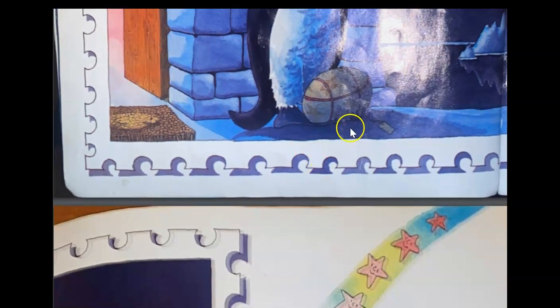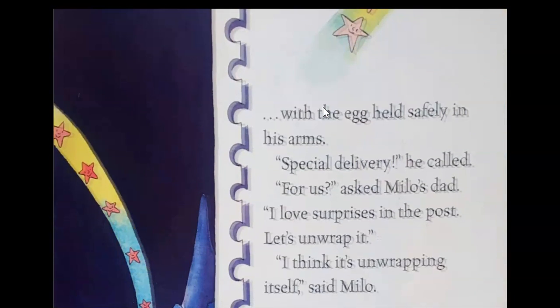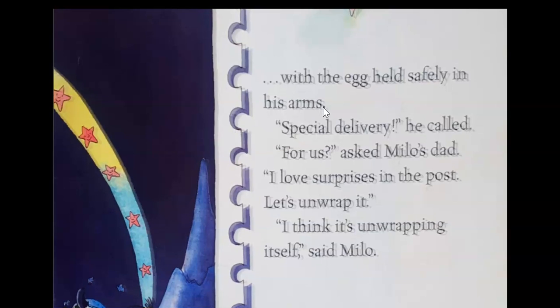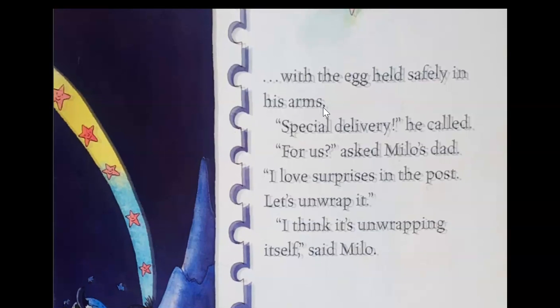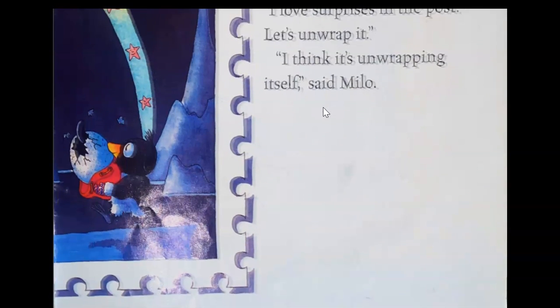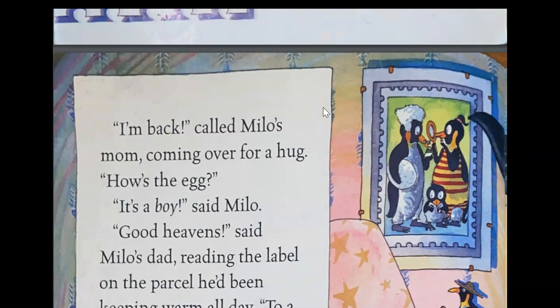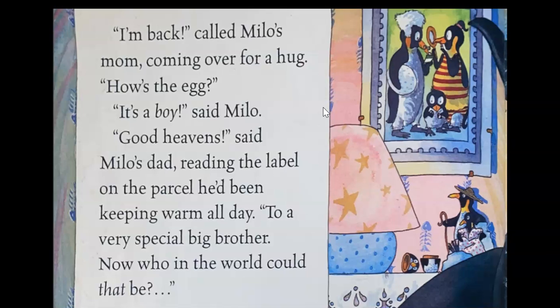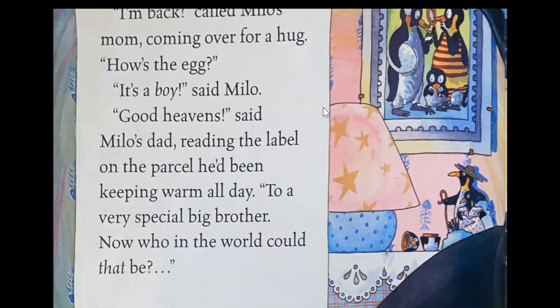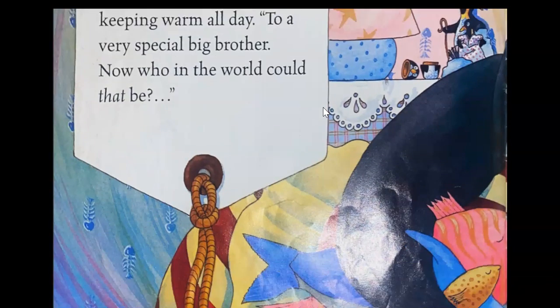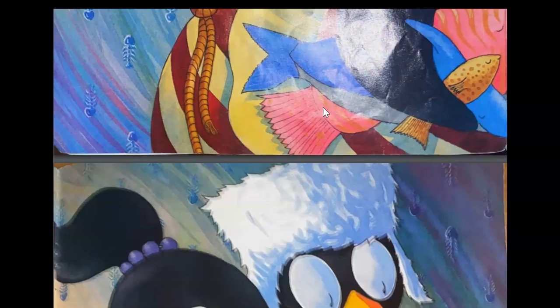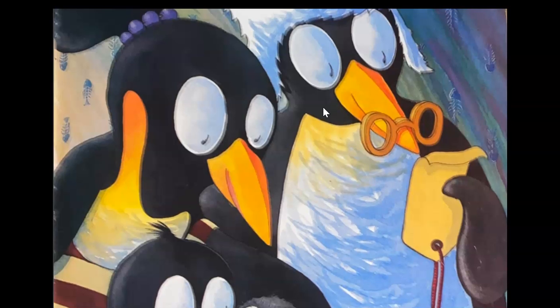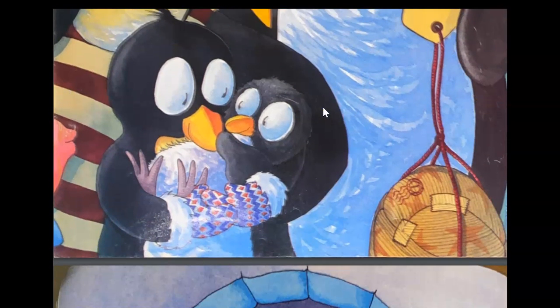So that he didn't have the egg after all. With the egg held safely in his arm, special delivery, he called. For us, asked Milo's dad. I love surprises in the post. Let's unwrap it. I think it's unwrapping itself, said Milo. I'm back, called Milo's mom, coming over for a hug. How's the egg? It's a boy, said Milo. Good heavens, said Milo's dad, reading the label on the parcel he'd been keeping warm all day. To a very special big brother. Now who in the world could that be? Oh, and there's the baby brother.